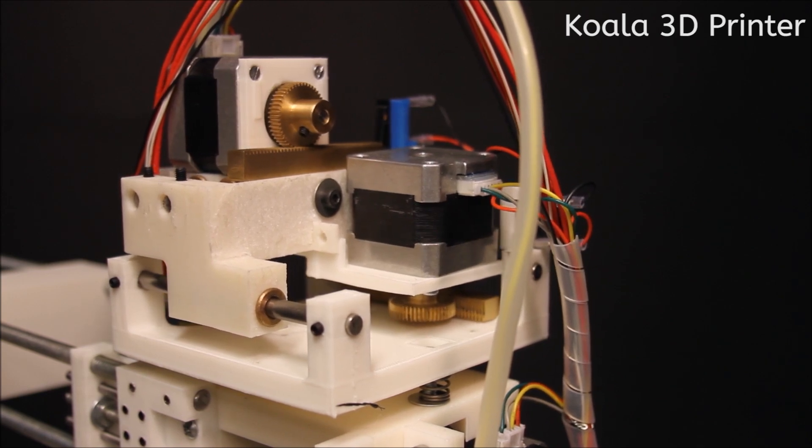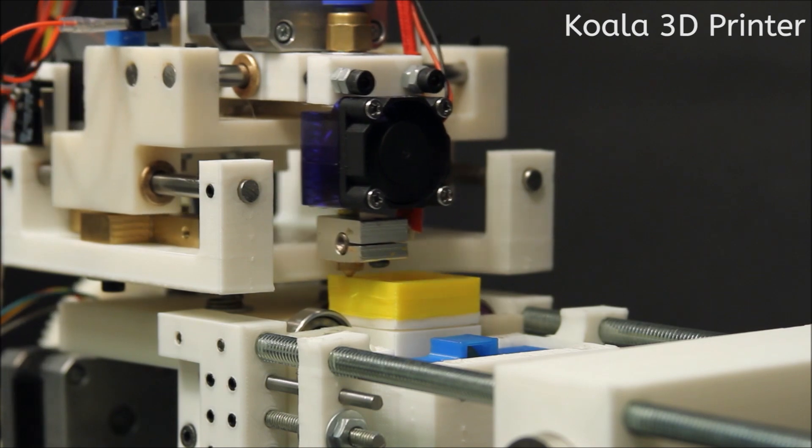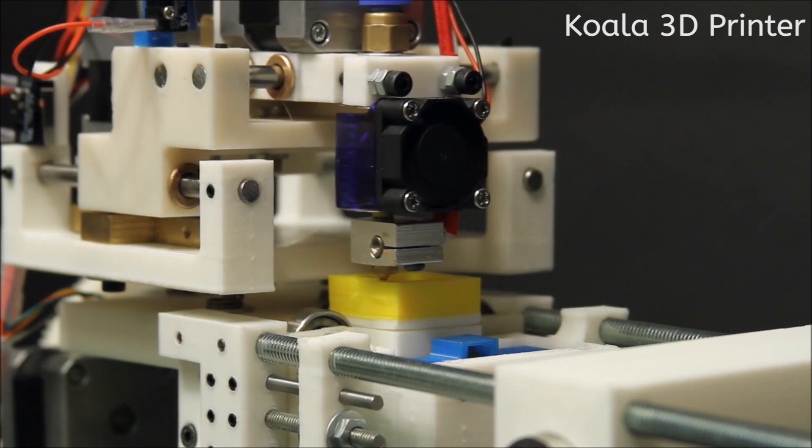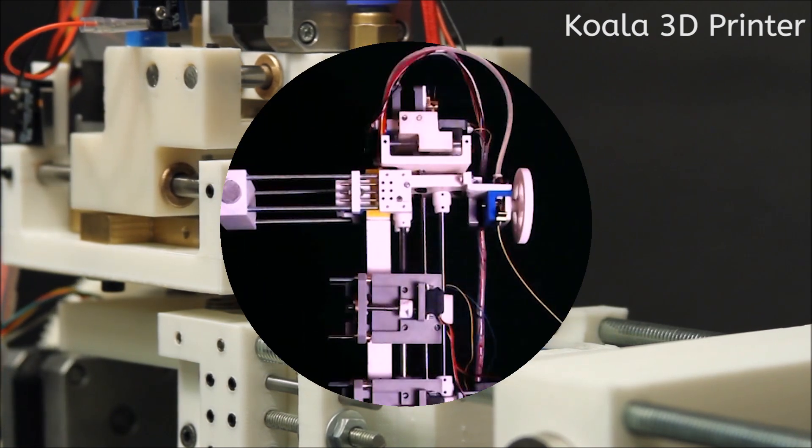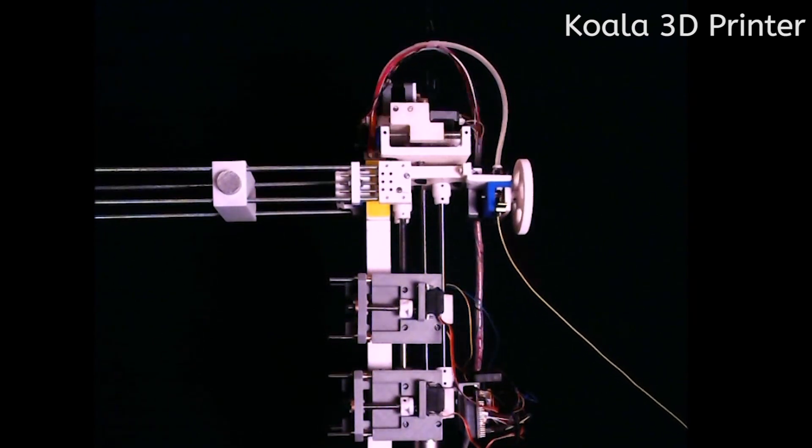This type of machine can be called a Z-Infinity Climbing 3D printer, but we prefer to call it Koala, as it climbs the printed structure very much like these animals climb trees.